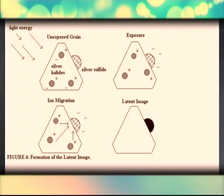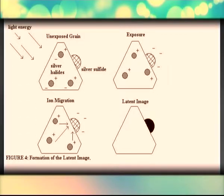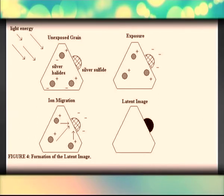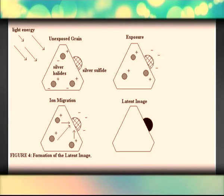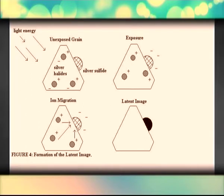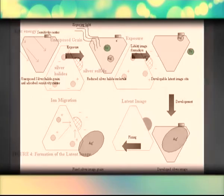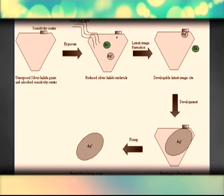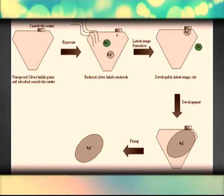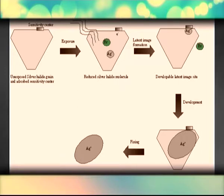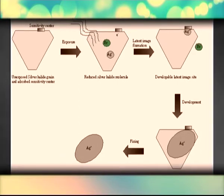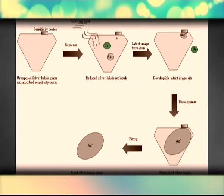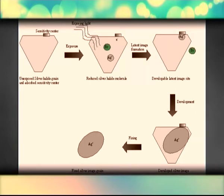The reason for the sensitivity relationship to grain size is related directly to how the grains are converted from a stable, non-developable state to another stable state — a latent state — from which they can be developed chemically. When a photon of light strikes a grain, it dissipates its energy in the crystal grain. This energy may or may not be enough to flip the crystal into a latent state. Generally, it takes a few photons to flip the grain, depending on its size and sensitivity.